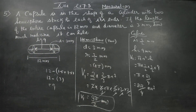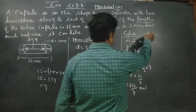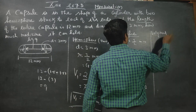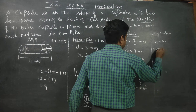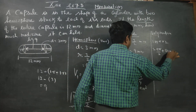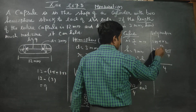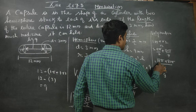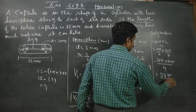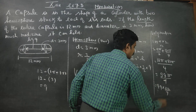After finding V1 and V2, we find the total volume of medicine: V1 + V2 = 9π/2 + 81π/4. Taking LCM of 4: 18π/4 + 81π/4 = 99π/4. Substituting π = 22/7: 99 × 22 divided by 4 × 7.